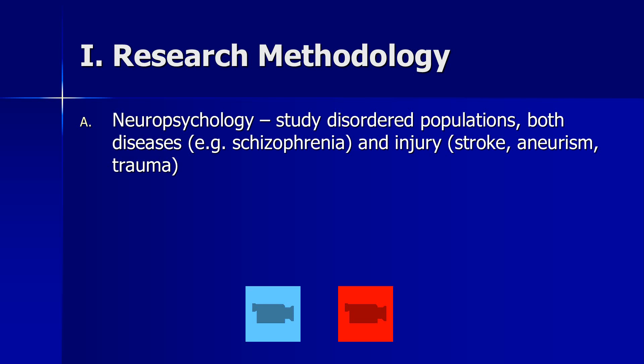For neuroscience methods, there are a number of ways cognitive neuroscientists gather data. One of them is to examine patient populations in a field we call neuropsychology. Neuropsychologists study disorder populations — people with mental disorders like schizophrenia or depression, or those with brain injuries such as stroke, aneurysm, or other trauma. I've already had you look at one such case: prosopagnosia, which is an inability to recognize faces.